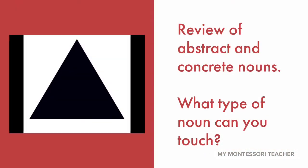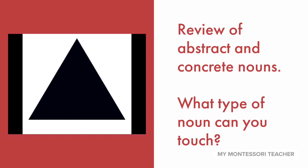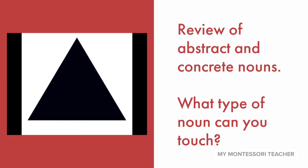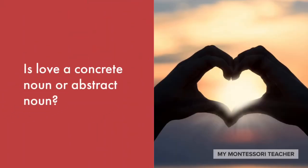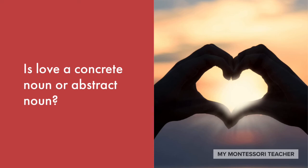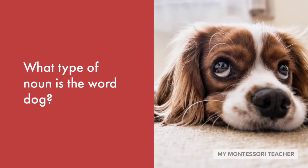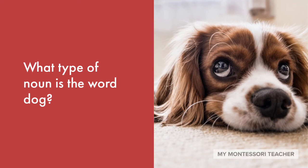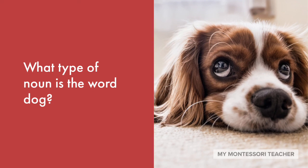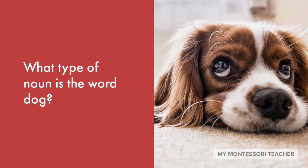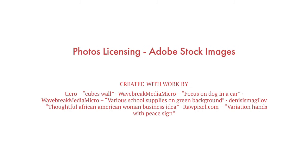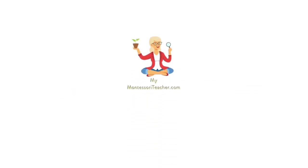Let's do a quick review. We've been talking about abstract and concrete nouns. What type of nouns can you touch? Did you say concrete? You're right. Is love a concrete noun or an abstract noun? Love is an abstract noun. What type of noun is the word dog? Did you say concrete? You're right. Dog is a concrete noun. That's it for this activity on concrete and abstract nouns.